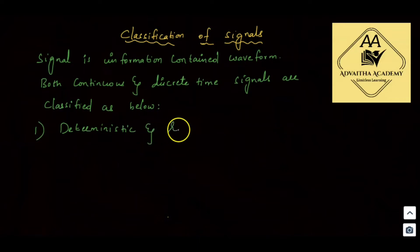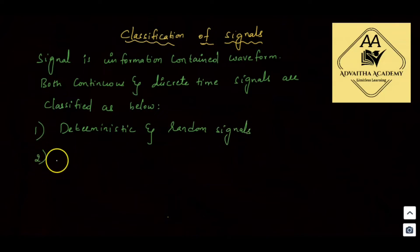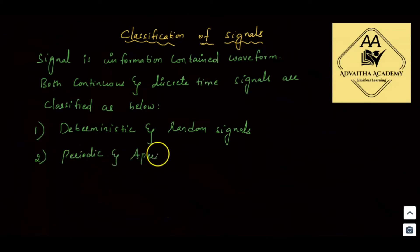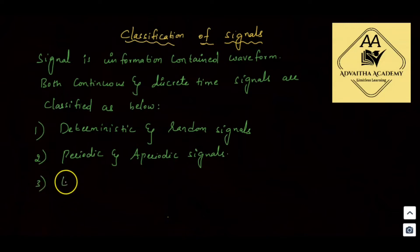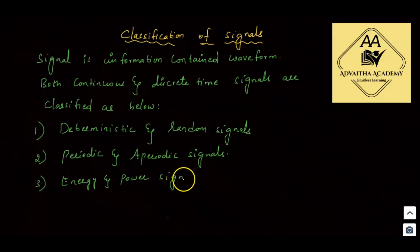First classification: deterministic and random signals. Second classification: periodic and aperiodic signals. Third classification: energy and power signals.